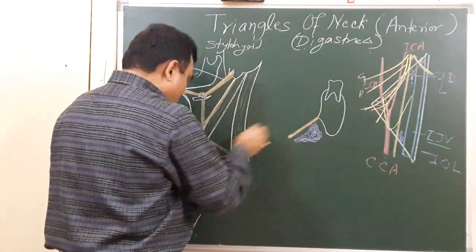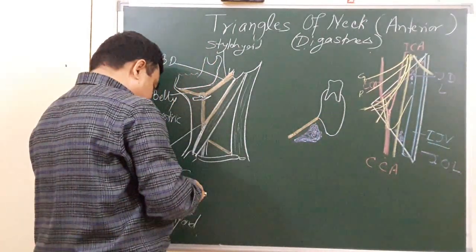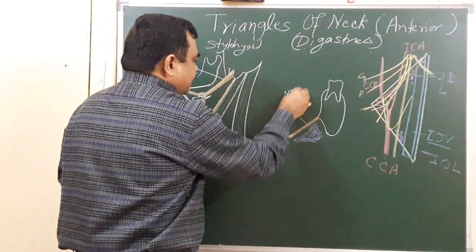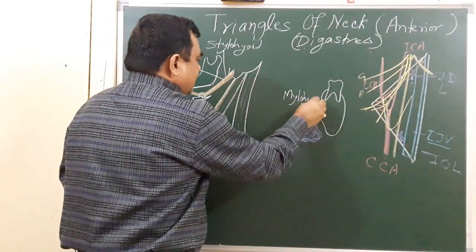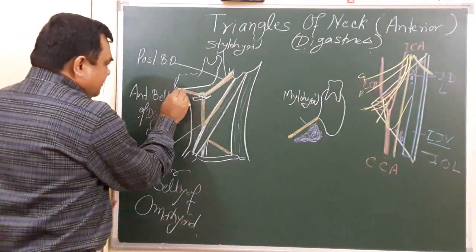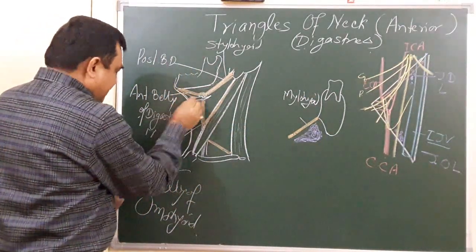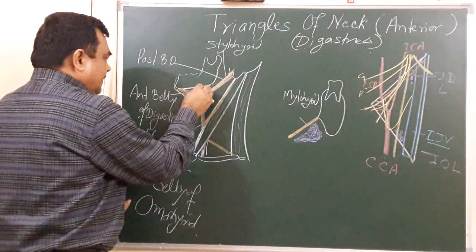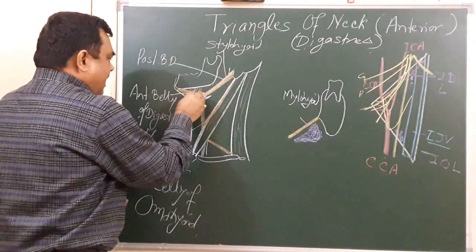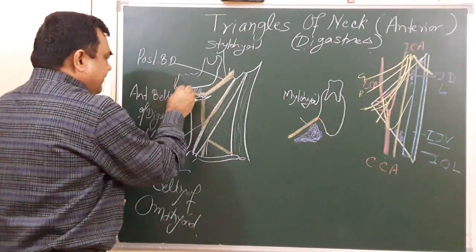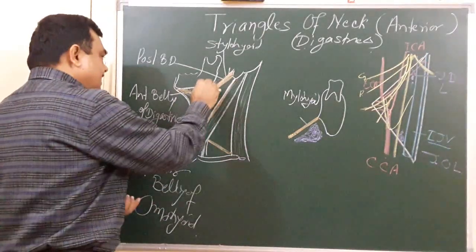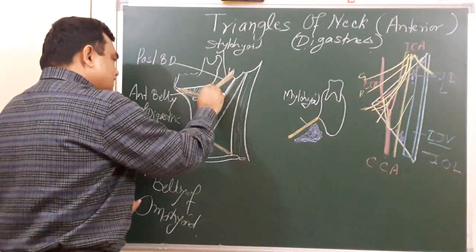This muscle is the mylohyoid muscle. This is the mylohyoid muscle. In this diagram this muscle is present here — this is the mylohyoid muscle, which forms the floor. And posteriorly another muscle also forms the floor.